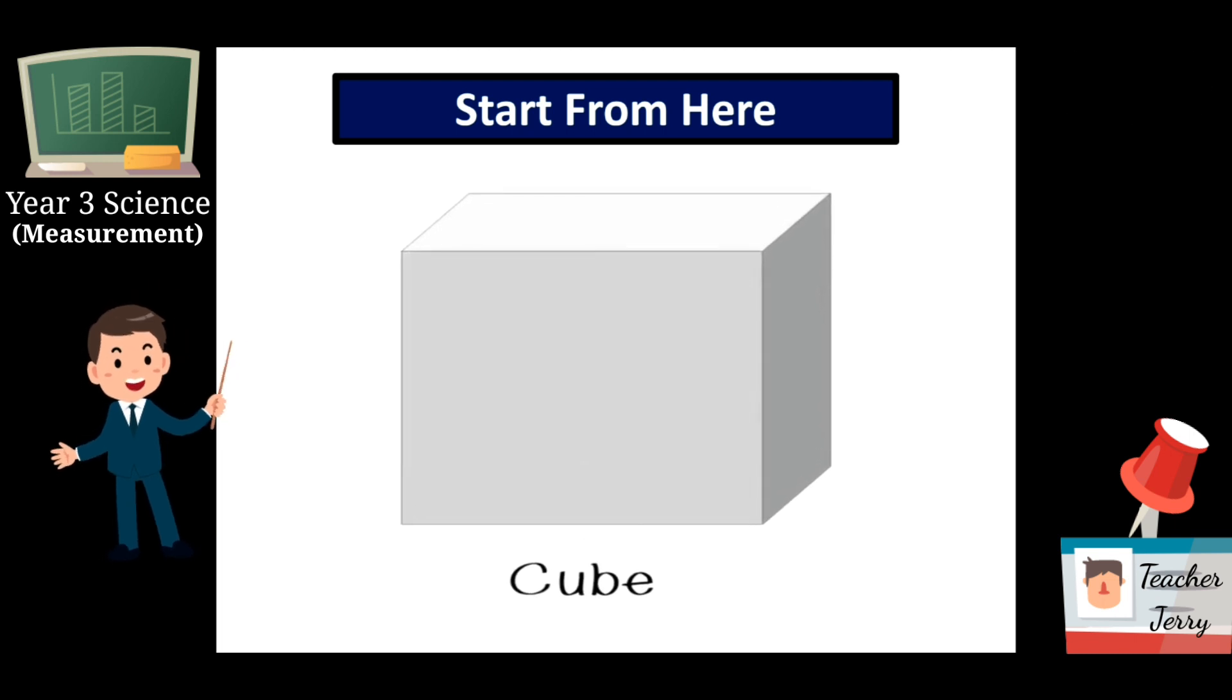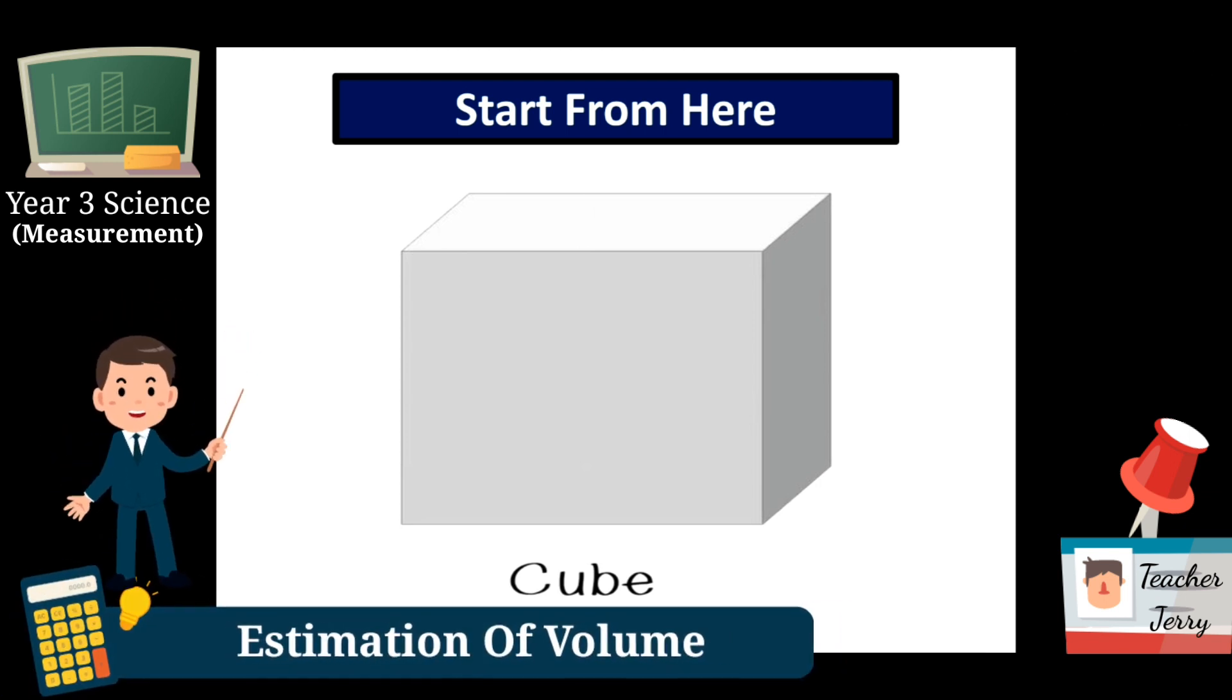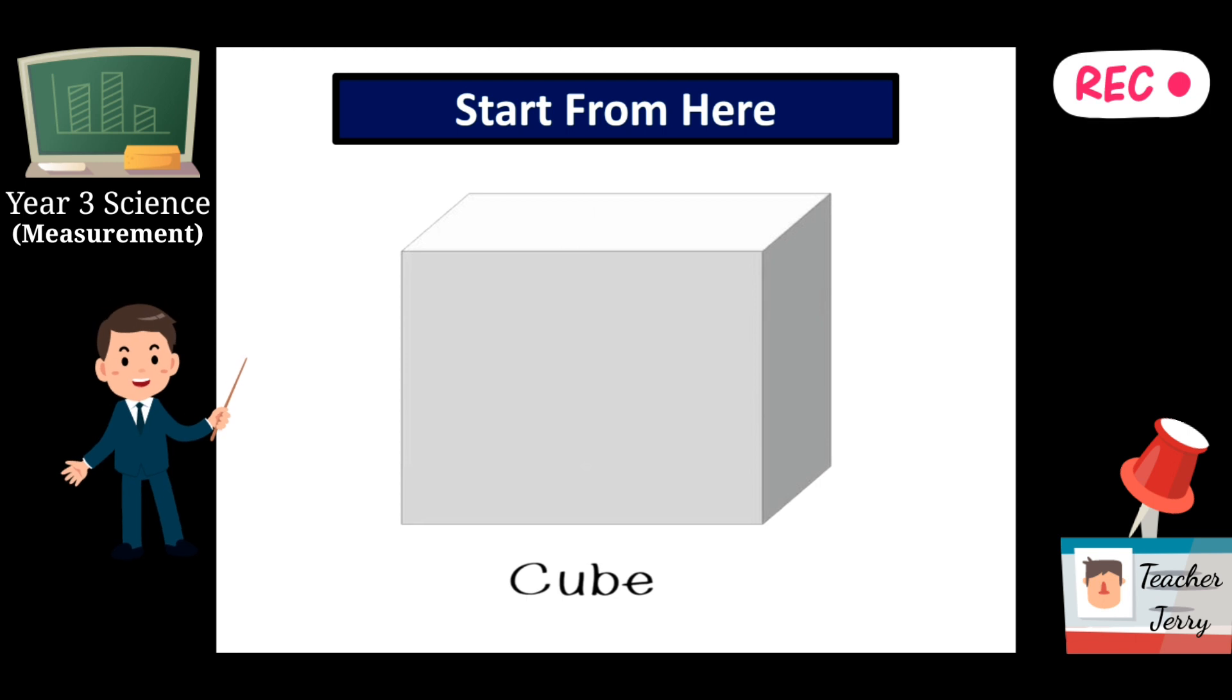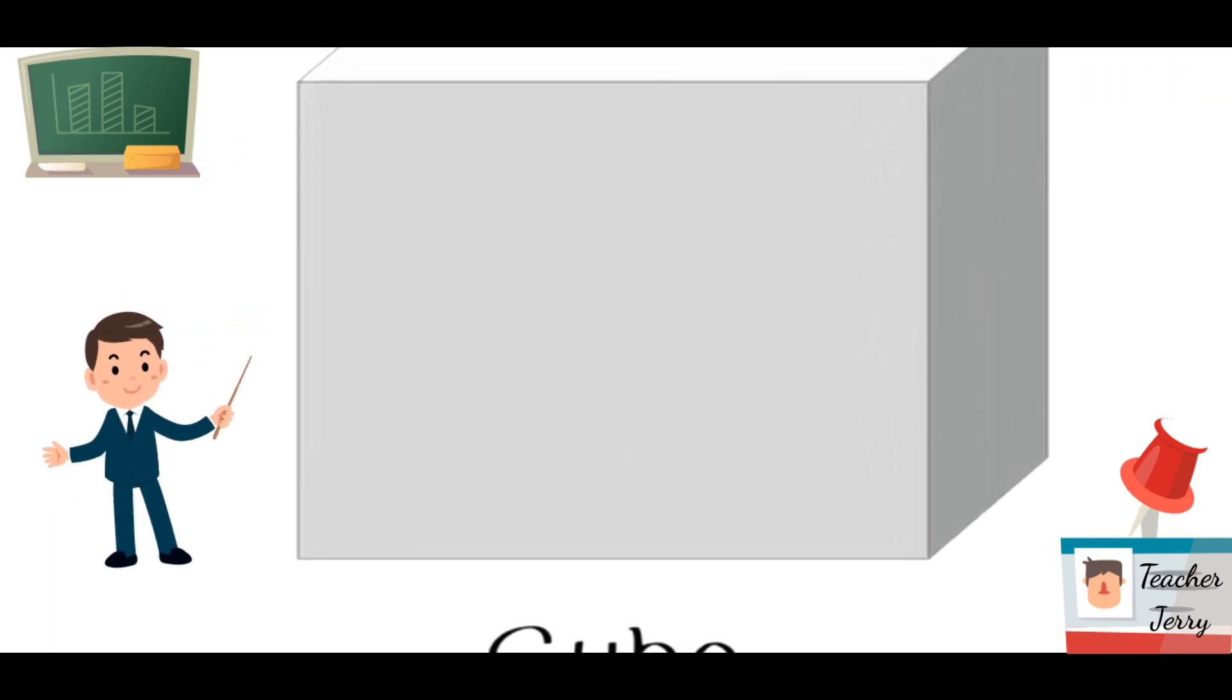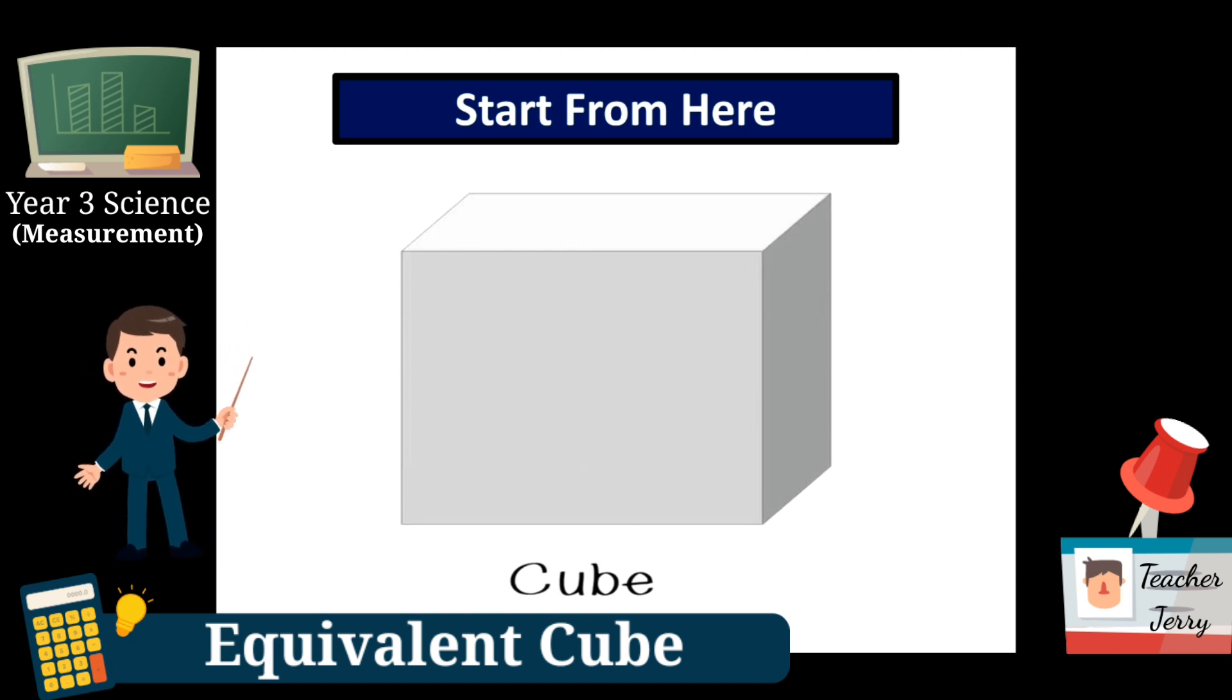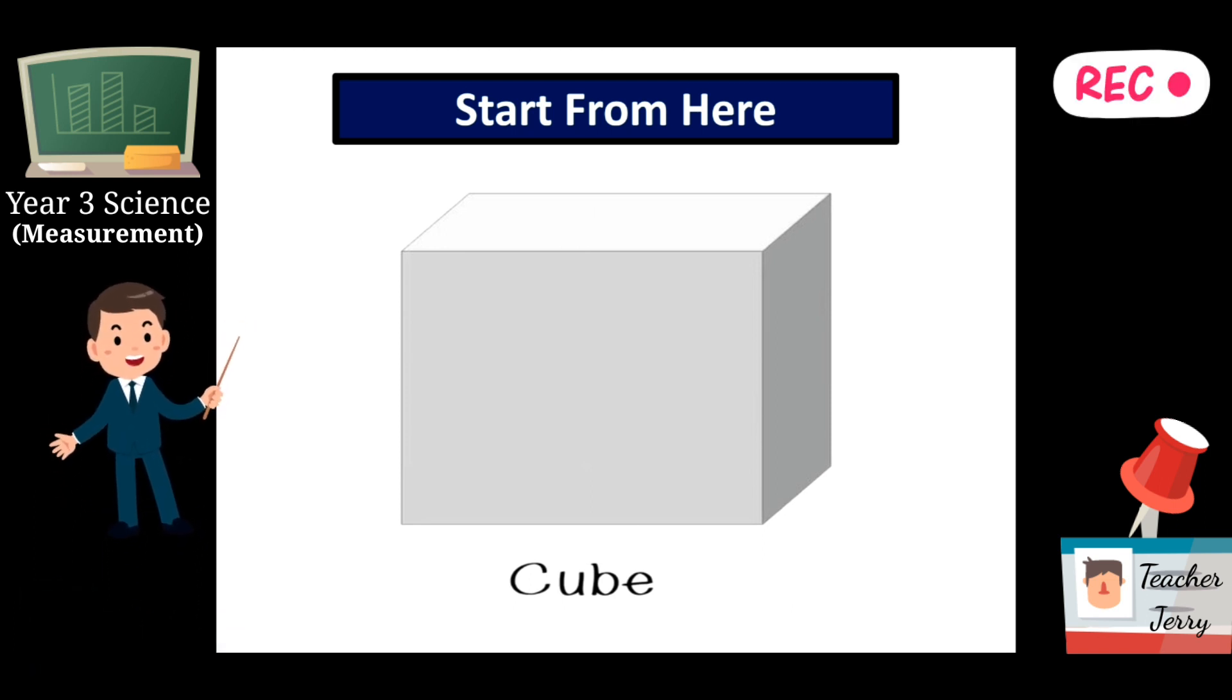Before we go further through the measurements of volume for liquid, we start from this one first - a cube. What is a cube? Cube is kubus - kubus dia seperti kotak tapi sisinya semua sama. Every edge of this box is the same - the length, wide and height is the same. These pictures maybe are not that perfect, but cube normally is occupied with the same length, same width and same height. Sisinya mesti sama - panjang, lebar, tinggi mesti sama, ini hanya contoh sahaja.